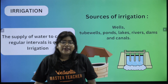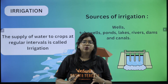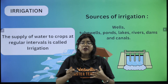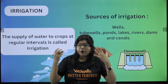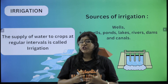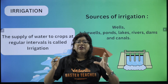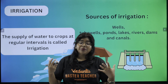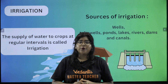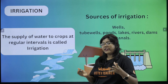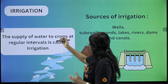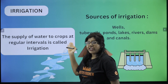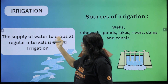What is irrigation? The definition of irrigation is the supply of water to crops at regular intervals. So here are the key points we will discuss.